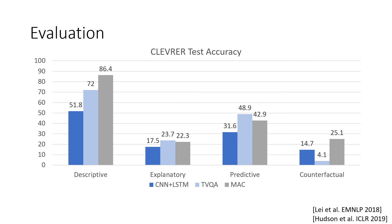We evaluated a wide range of baseline models, including current state-of-the-art models on video question-answering and image-reading datasets. From the results, while the MAC network achieves more than 85% accuracy on descriptive questions, all models perform poorly on the remaining explanatory, predictive, and counterfactual tasks. We believe that to solve causal reasoning, the model must use structured central representation and implicitly capture the dynamics of the video's internal state.